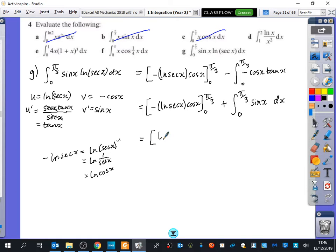So I've got, I'm going to write the cos x to begin with now. So I've got cos x ln cos x between 0 and π over 3. What's the integral of sine x? Minus cos x.